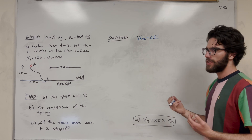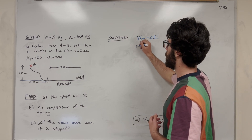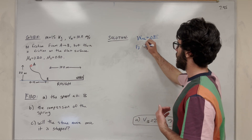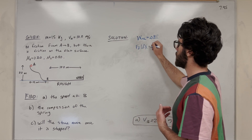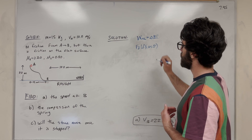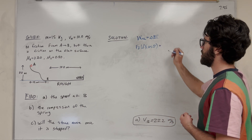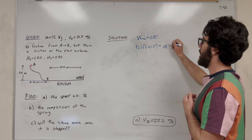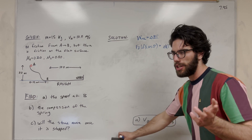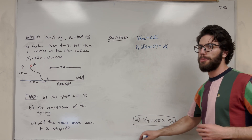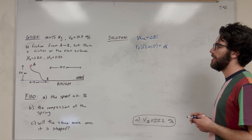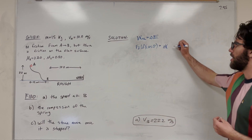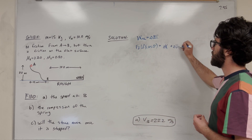Work is force times distance. We replace this with force of friction times distance — that 100 meters — times cosine of theta. This equals the change in energy. For the change in energy: we have change in kinetic energy, since we're going to lose kinetic energy due to friction as we slow down. And we're also going to compress the spring, so we need to add the delta U spring — spring potential energy.